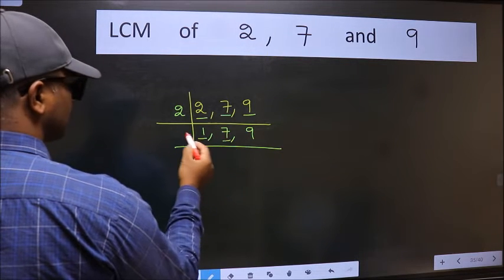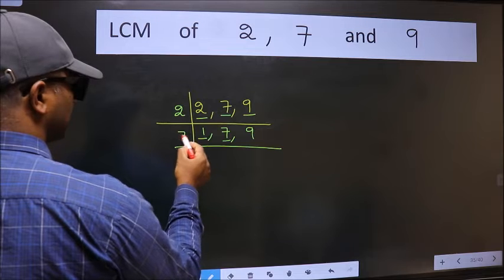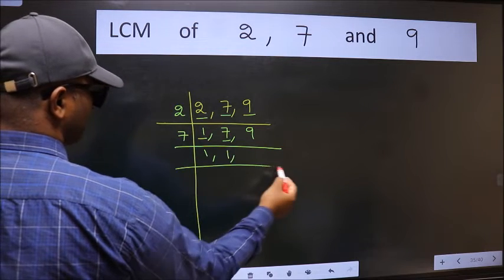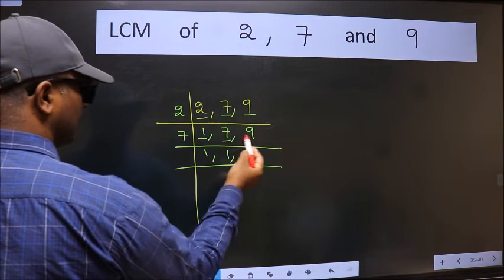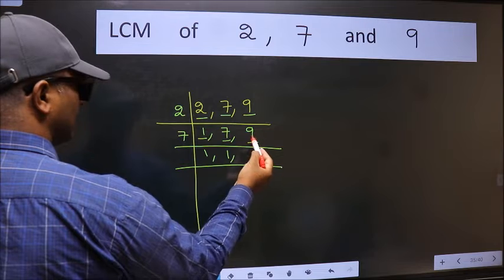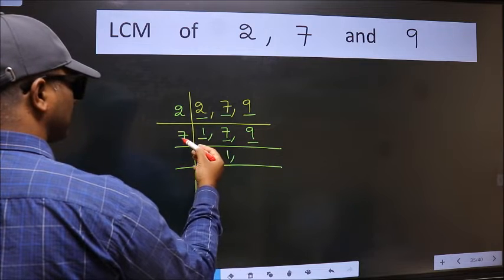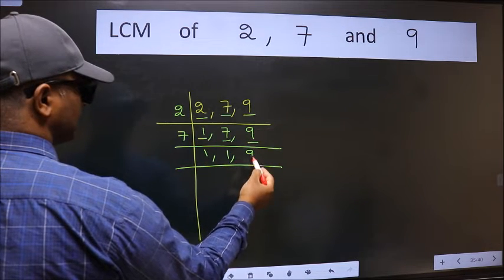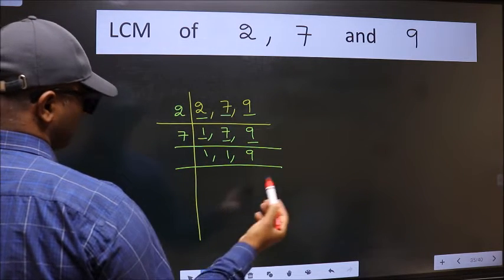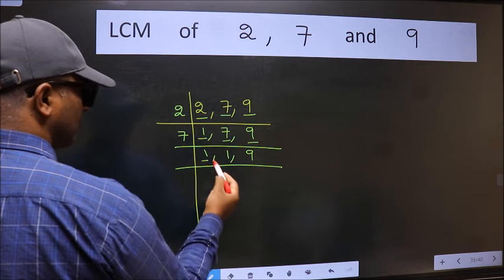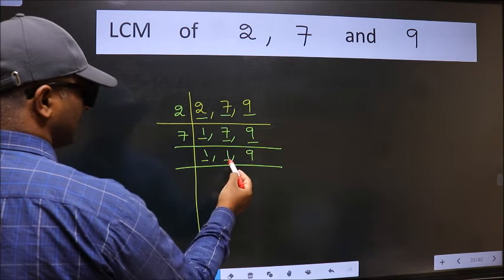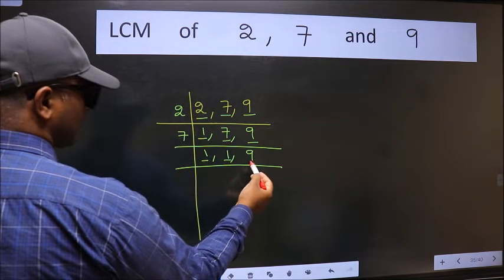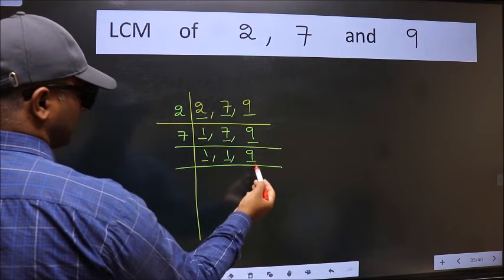7 is a prime number, so 7 divides by 7 once. The number 9 is not divisible by 7, so we write it down as it is. Now we got 1 here and here, so focus on the next number, 9.